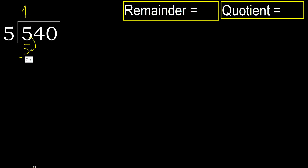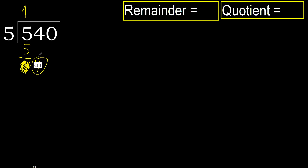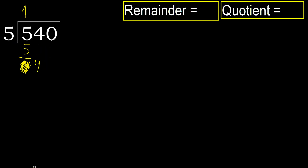5 minus 5 is 0. Next, eliminate the 0 on this side. Fold — but fold is less, therefore next.